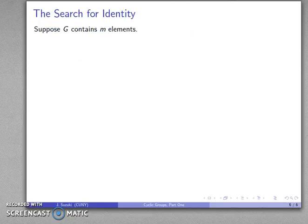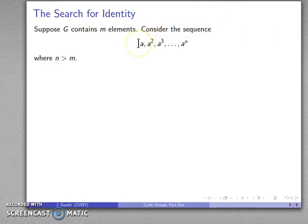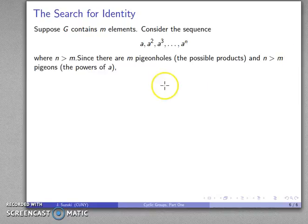Well, here's an important thing we can do with it. Suppose I have a set G with M elements, and I'll consider this sequence of powers A, A squared, A cubed, and so on, all the way up to A to the N, where N is anything greater than M. It doesn't really matter what it is, as long as it's larger. Because there's M pigeonholes, those are the possible products, because G contains M elements. Every one of these products has to be one of those M elements.